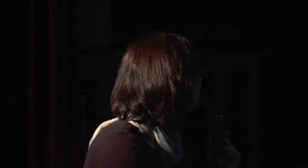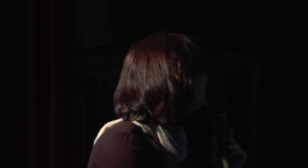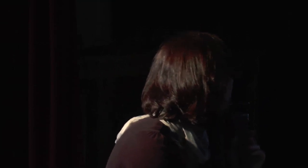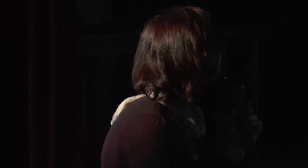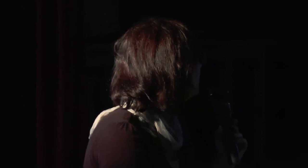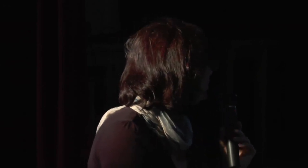Production of an ensemble from the seven individual models is done at INERIS, the centralized production center. Evaluation is based on an independent set of measurements. The main products are assessment and validation reports produced regularly. Similarly to the daily production, the same input data is used, plus forest fire emissions which are always included in the reanalysis. Surface data comes from airbase validated data, split into two sets — one for assimilation and one for validation. Each center does its local production of yearly reanalysis for ozone, NO2, PM2.5, and PM10.